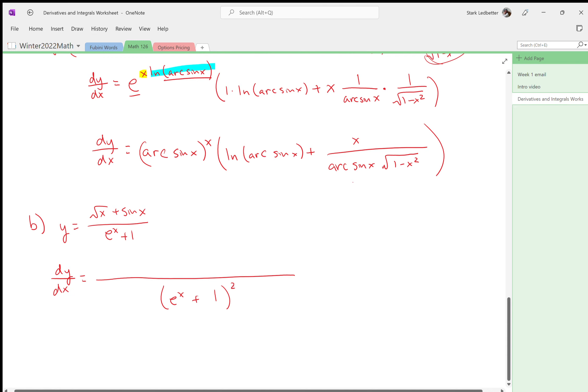So quotient rule: derivative of the top times the bottom minus the top times derivative of the bottom, all over the bottom squared. Okay, so I'll go ahead and write all over the bottom squared. Now I need to take derivative of the top. Root x is x to the one half, so I'm taking down the one half and I'm going to have x to the negative one half, which is one over root x.